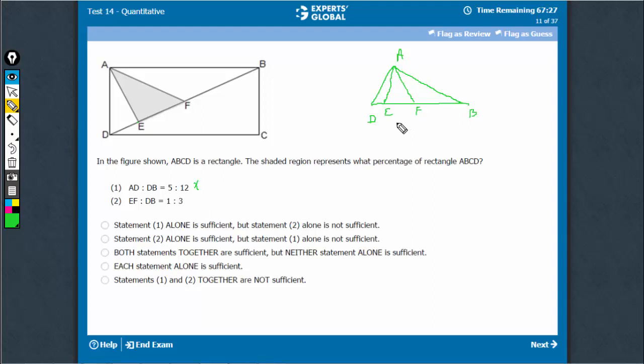Statement 2 says that this part, if EF is 1, DB is 3, right?